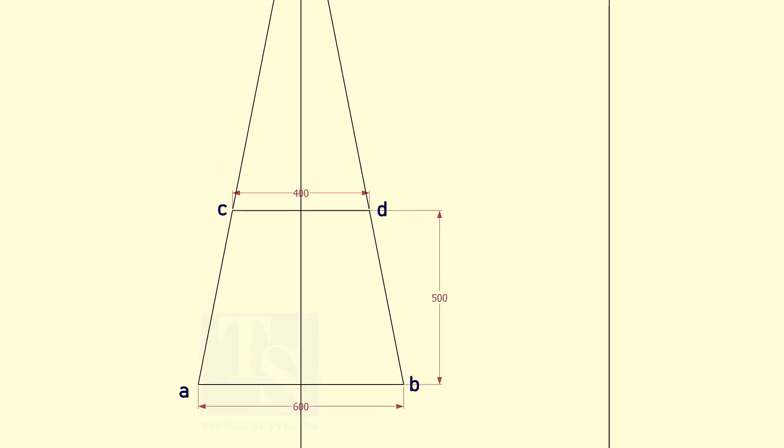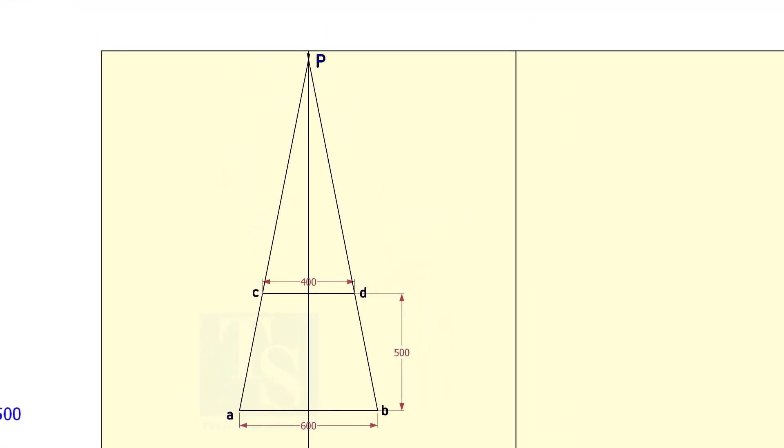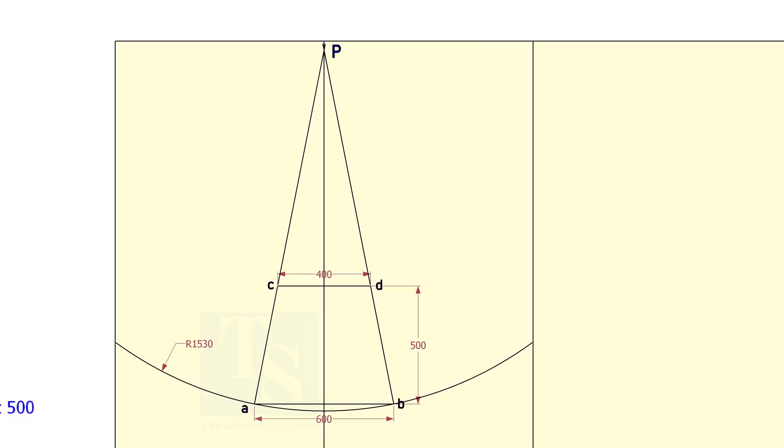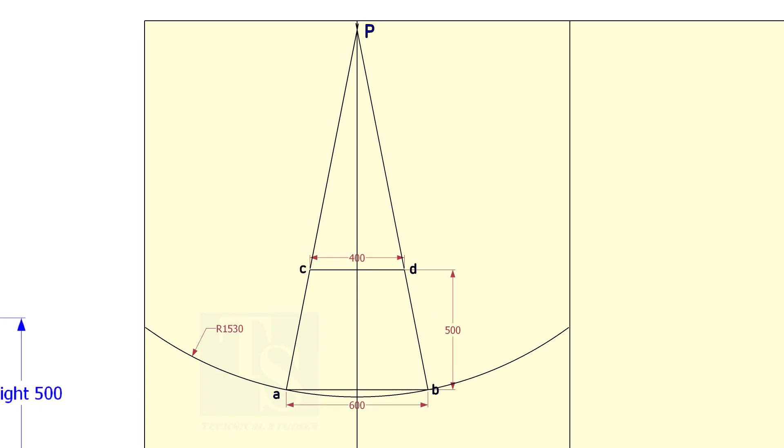Extend the lines AC and BD until the lines intersect each other. Draw an arc, centering P and the radius PA. Draw the arc P-C.